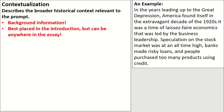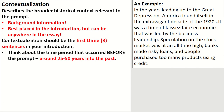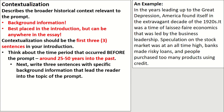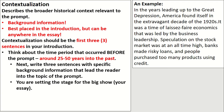It's crucial that you understand the six-point LEQ rubric so you can score as high as possible. Let's begin with the very first point: contextualization. Contextualization is described as describing the broader historical context relevant to the prompt — it's background information. It's best placed in the introduction, but it can really be put anywhere in the essay. Contextualization should be the very first three sentences in your introduction — the first half of your introduction. Think about the time period that occurred before the prompt, around 25 to 50 years into the past, and write three sentences with specific background information that lead your reader into the topic of the prompt.